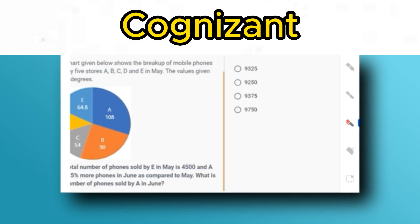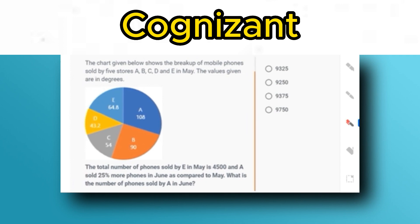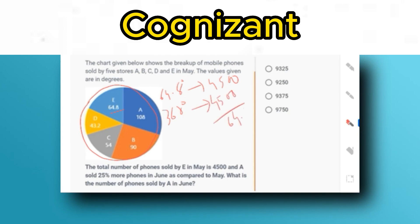The total number of phones sold by E in May is 4,500, which corresponds to 64.8°. Since the full circle is 360°, the total number of mobiles sold is: 4,500 divided by 64.8, multiplied by 360, which equals 25,000. So the total number of mobiles sold in May is 25,000.